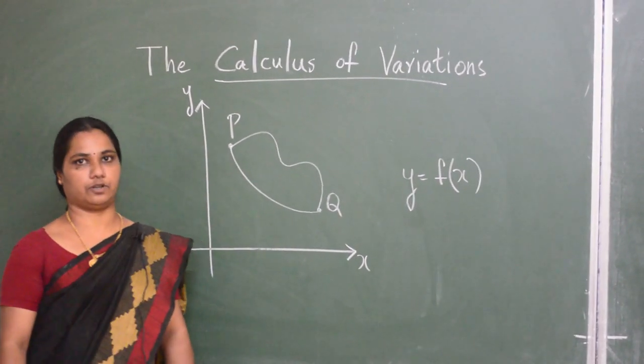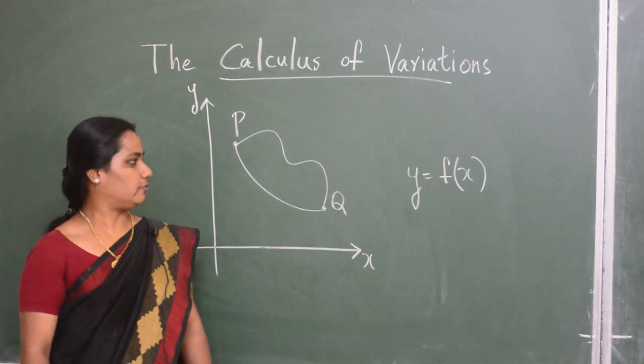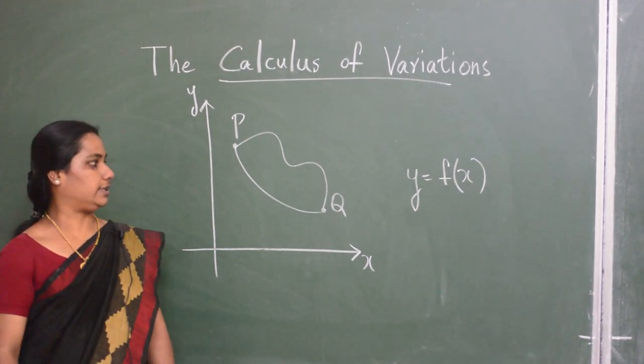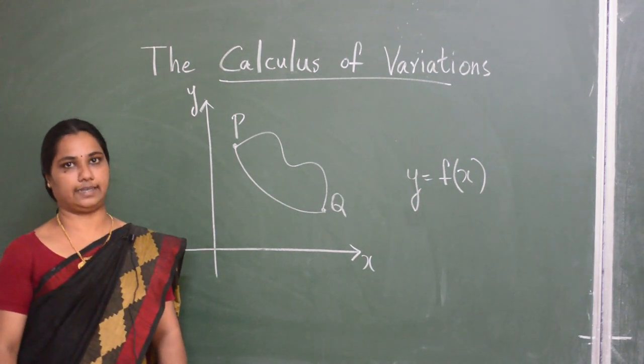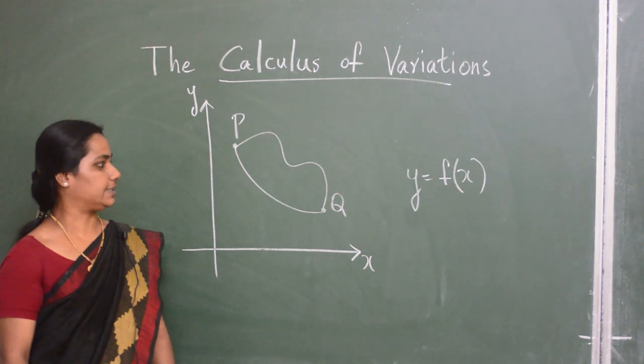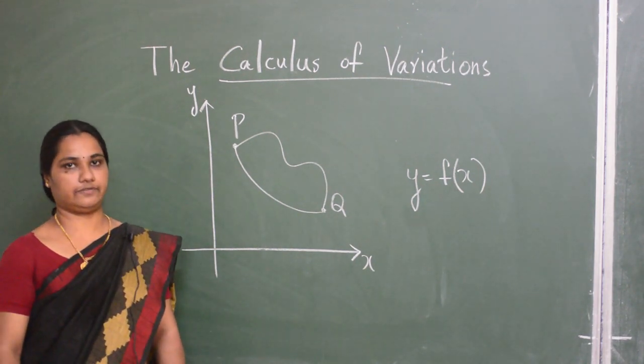Similarly, when we consider the above three problems, we can see that what we have done is we are considering a quantity which is a property of the entire curve and we seek the curve that minimizes the quantity.